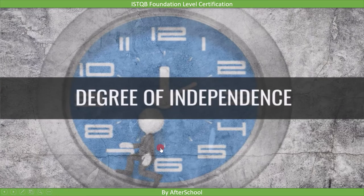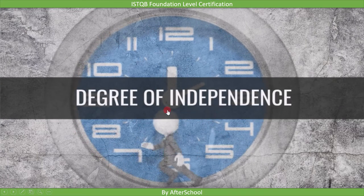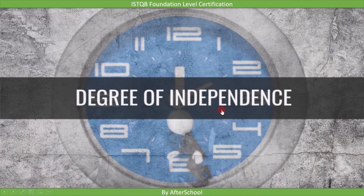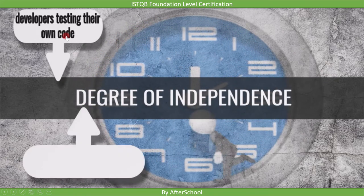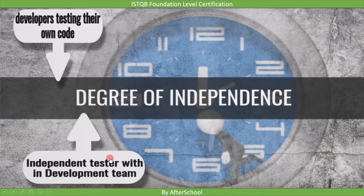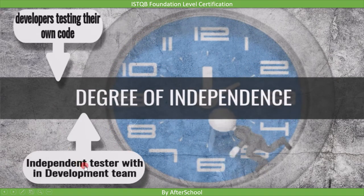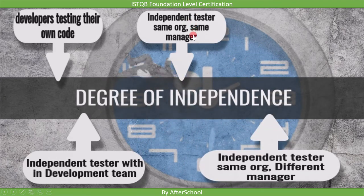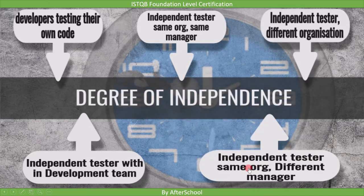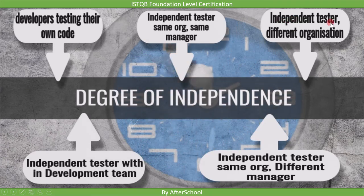Let's review all the examples of degree of independence: first, developer testing their own code; second, independent tester within the development team; third, independent tester in the same organization under the same manager; fourth, independent tester in the same organization but different manager; and last, independent tester in a different organization.